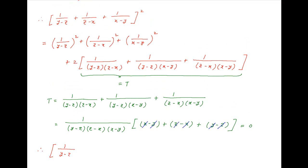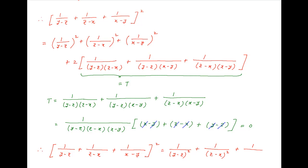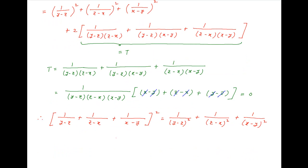Substituting t = 0 in the above equation, we get [1/(y−z) + 1/(z−x) + 1/(x−y)]² = 1/(y−z)² + 1/(z−x)² + 1/(x−y)², which is the required result.